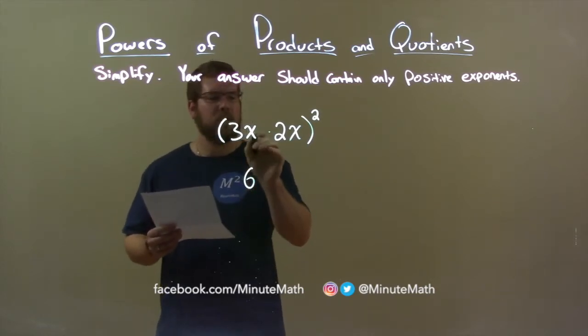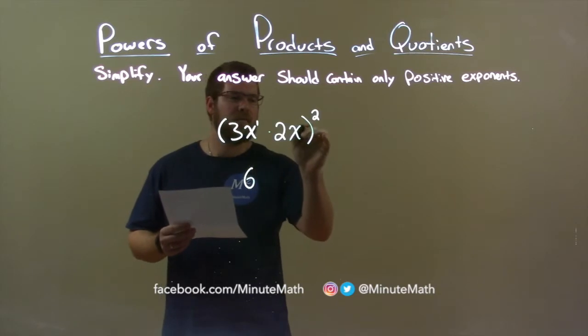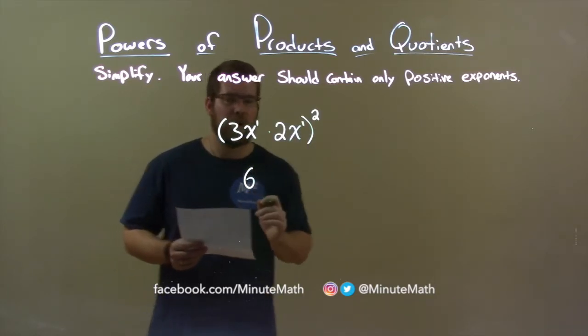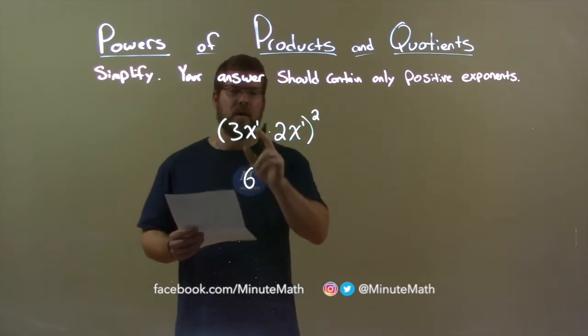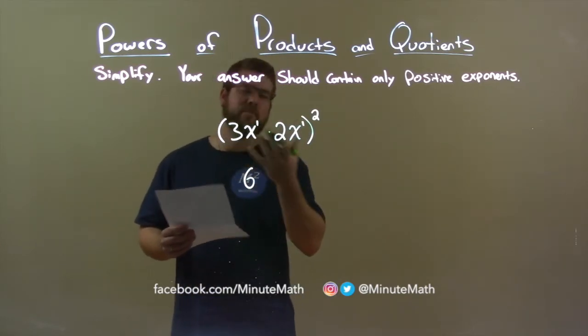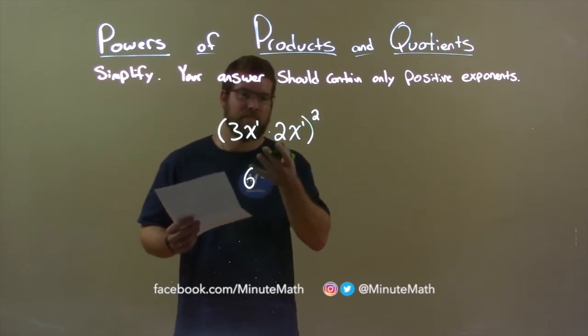Now the variables. Well, x is really x to the first power, and here we have x to the first power as well. When we multiply variables, we add the exponents if the variables are the same, and 1 plus 1 is 2. Really, x times x is x squared. You should know that.